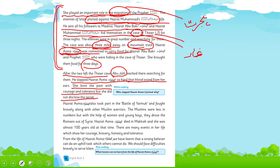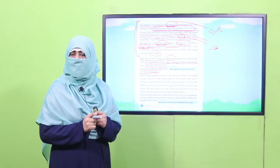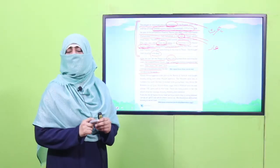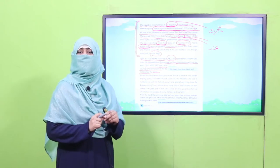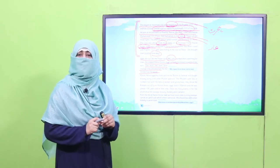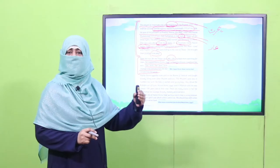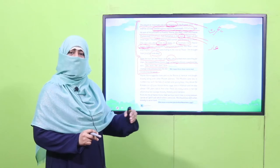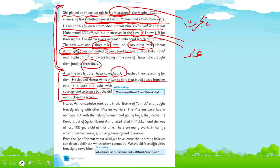حضرت اسمہ نے اس وقت کی تمام تکالیف برداشت کیں لیکن کسی کو بھی نہیں بتایا کہ نبی اکرم صلی اللہ علیہ وآلہ وسلم اور حضرت ابو بکر صدیق کہاں ہیں۔ اور اسی act کی وجہ سے وہ دونوں safely مدینہ پہنچ گئے، اور وہاں ایک نئی اسلامی ریاست کا قیام ہوا۔